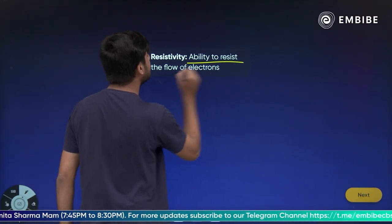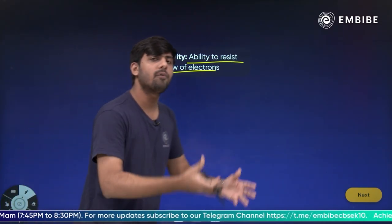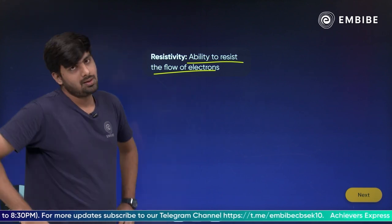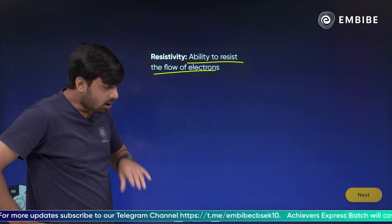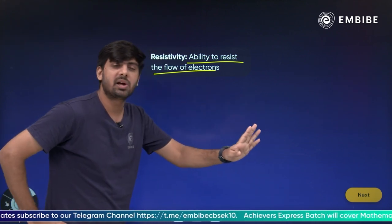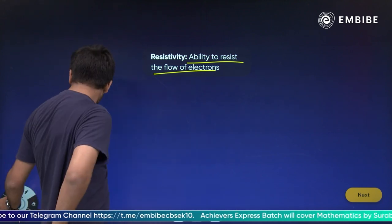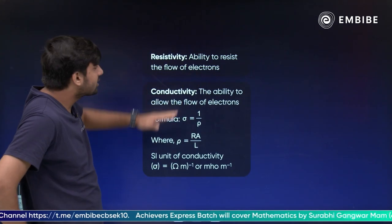Simply, resistivity is the ability to resist the flow of electrons. We are so negative that we are able to resist the power of electrons. Why not we have to read it in positive way? Because we have to read it in positive way.